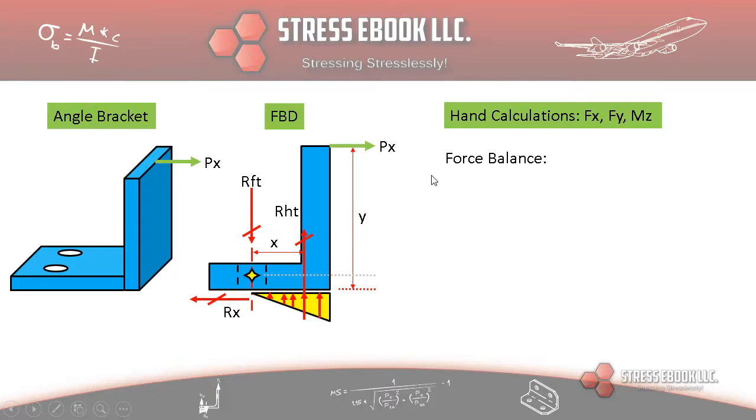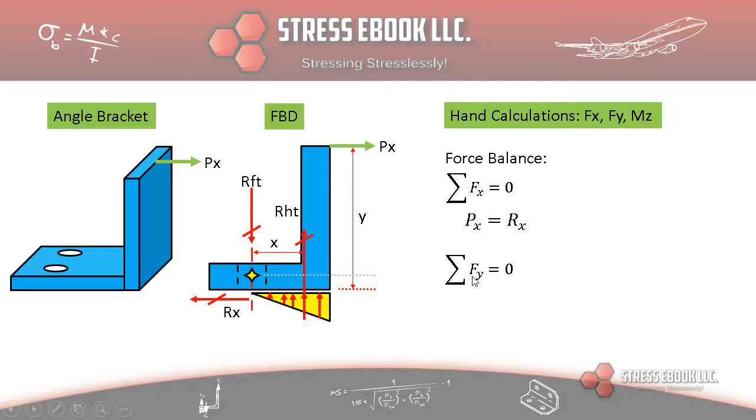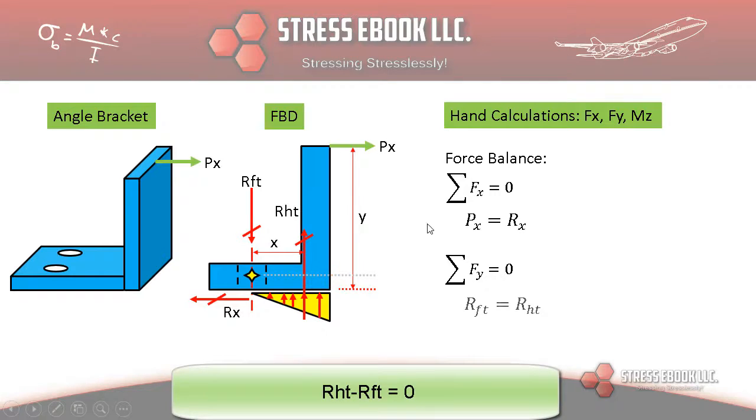First thing we're going to do is force balance. It's the same as before. Sigma FX equals zero, and therefore PX must equal RX. So the next equation that we're going to get into is Sigma FY equals zero.